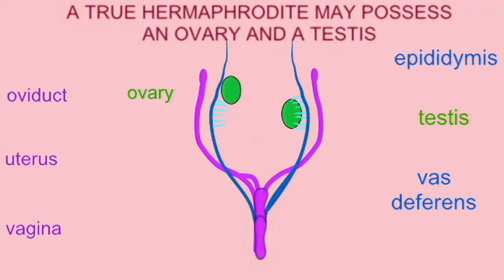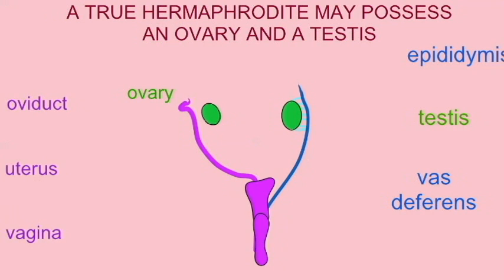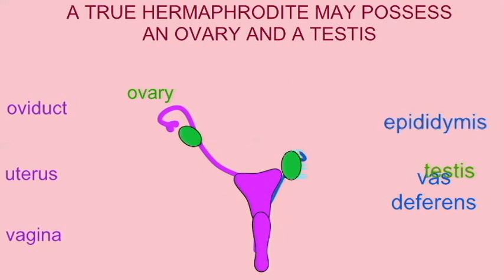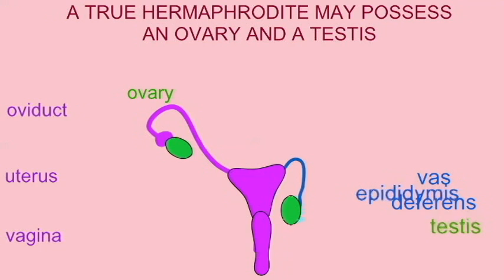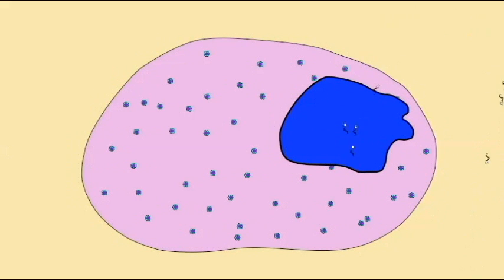If the mosaicism of a gynandromorph affects their gonads, then one could observe one testis and one ovary, and an individual could be a true hermaphrodite. A single gonad could possess both X-bearing ovarian cells and Y-bearing testicular cells and therefore be referred to as an ovotestis.